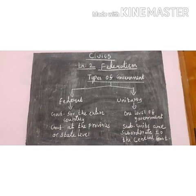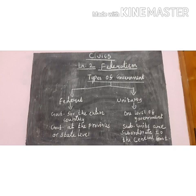The government for the entire country holds full power. Below that is the provincial or state level government, which controls certain functions. There is also the central level of government, with subunits beneath it.